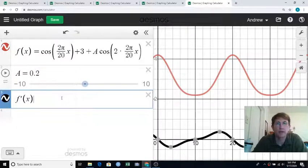If I do f prime of x, how could I use that to talk about where the inflection points are or where the original function is concave up or concave down?